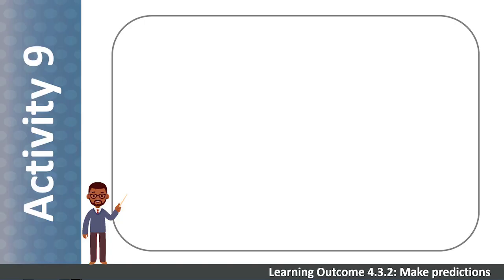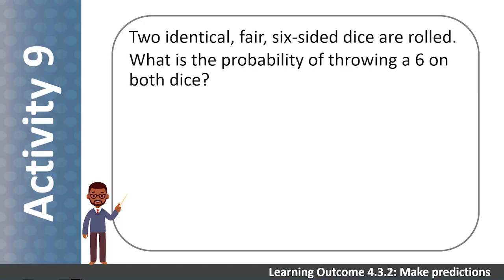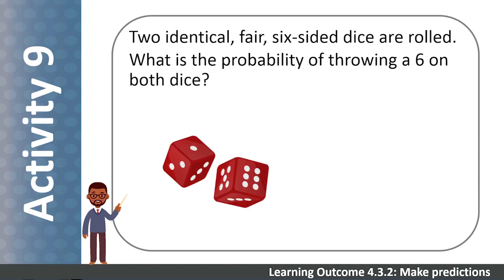Now please do this calculation on your own. Two identical, fair, six-sided dice are rolled. What is the probability of throwing a six on both dice?